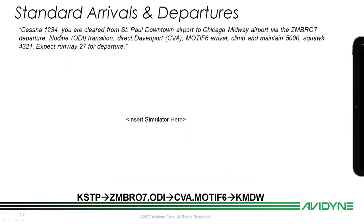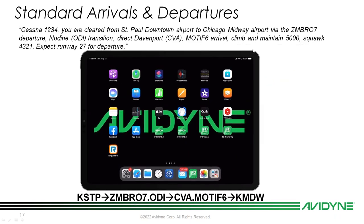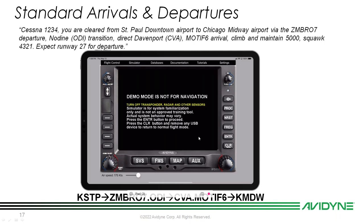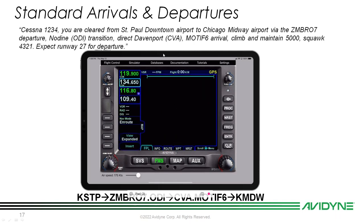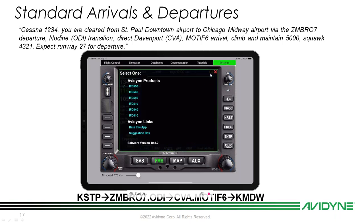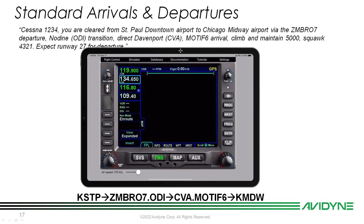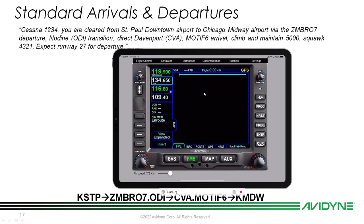Let's load this into the IFD trainer. Bring up the IFD Trainer app — I'll leave it in IFD 550 mode, but you can change to your specific model in settings. Since this is a simulator, we need to manually set our origin. I'll tap the black area on screen, select my origin, and type KSTP using the on-screen keyboard, then hit enter.